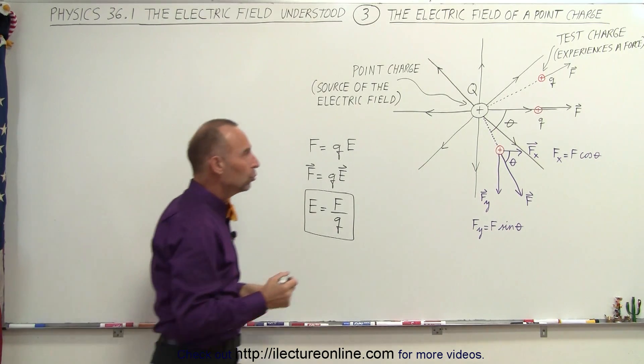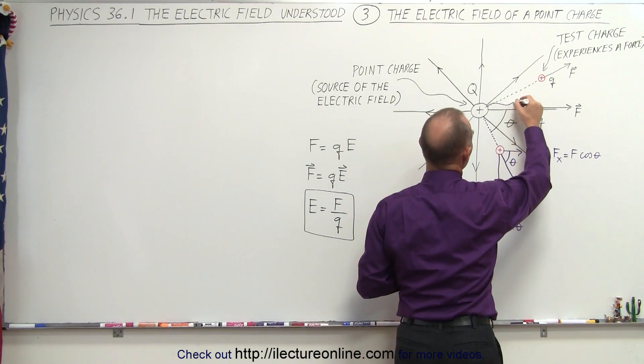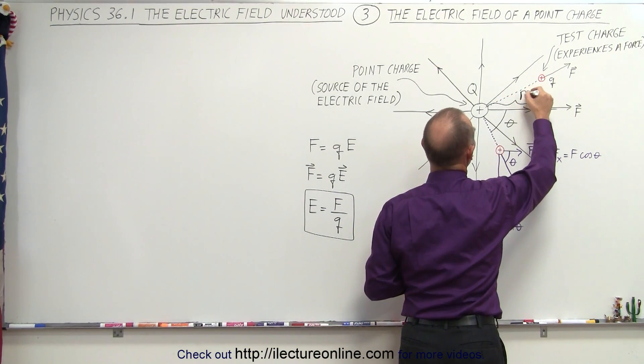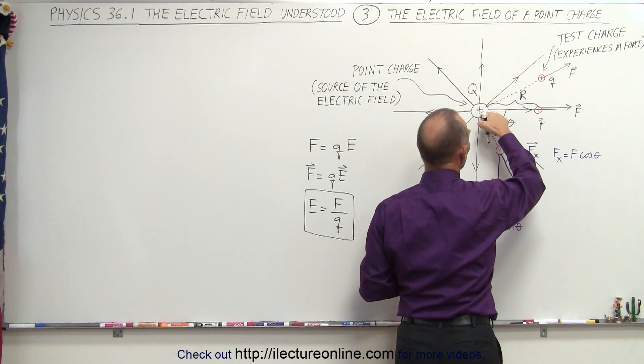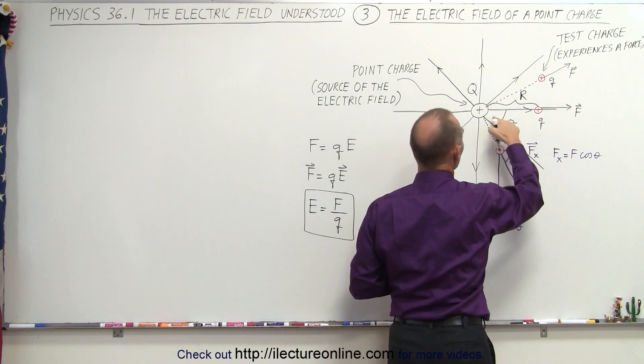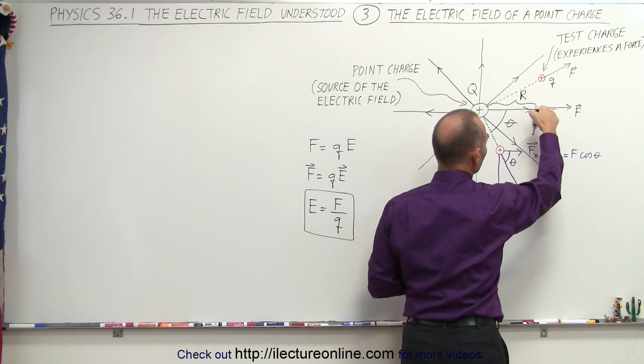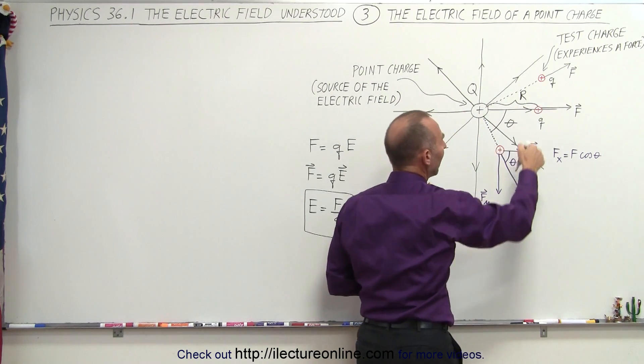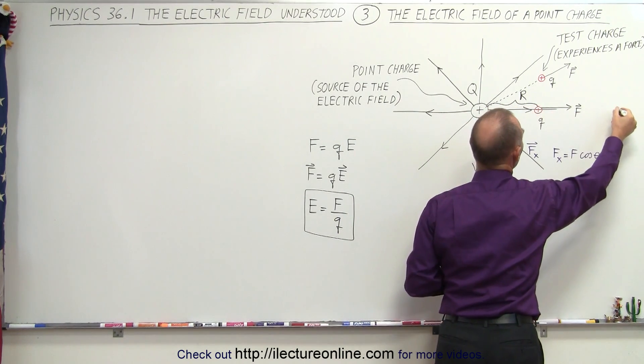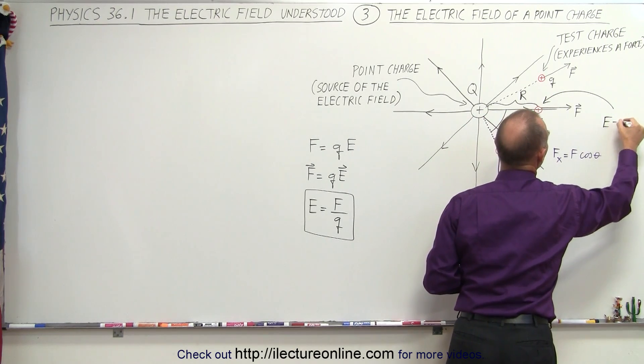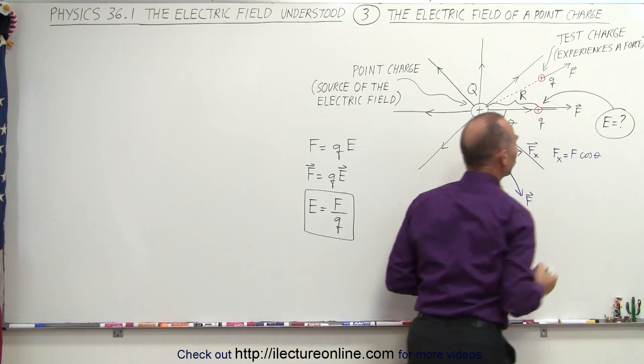What we could also do is if we assume now that this here is the distance, let's call it r, away from the source charge, from the point charge right here, and this is the test charge placed a distance r away, and we want to know the strength of the field at that location. What is the electric field strength equal to at that location?